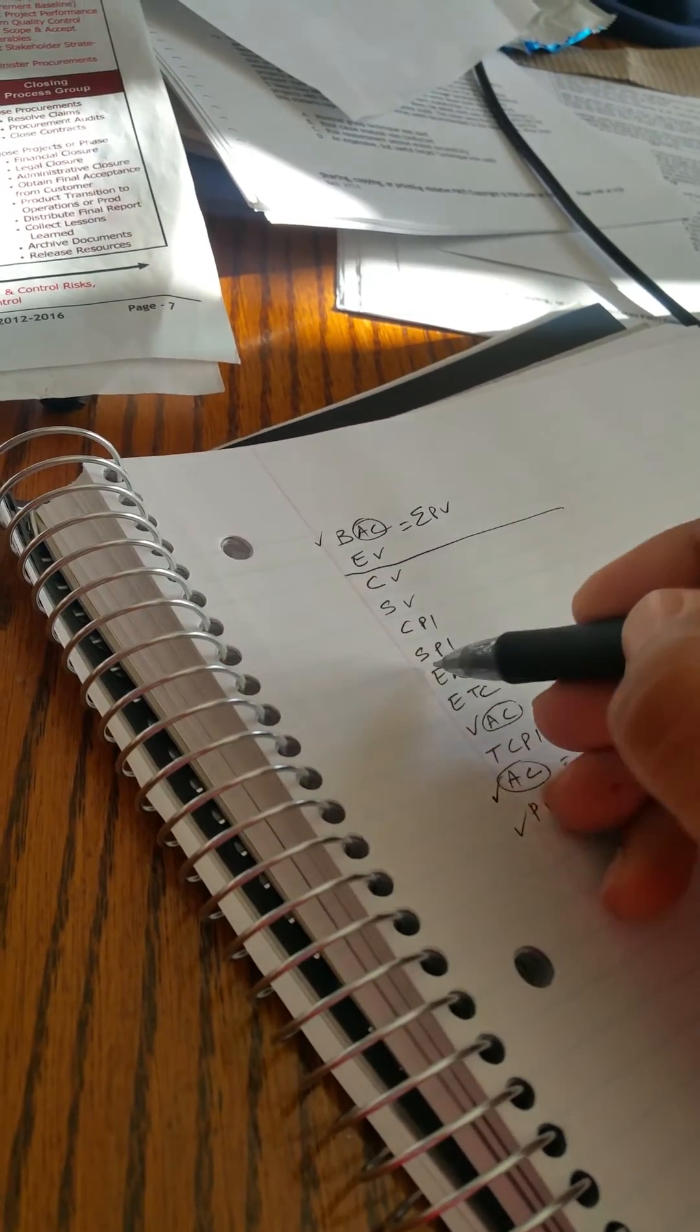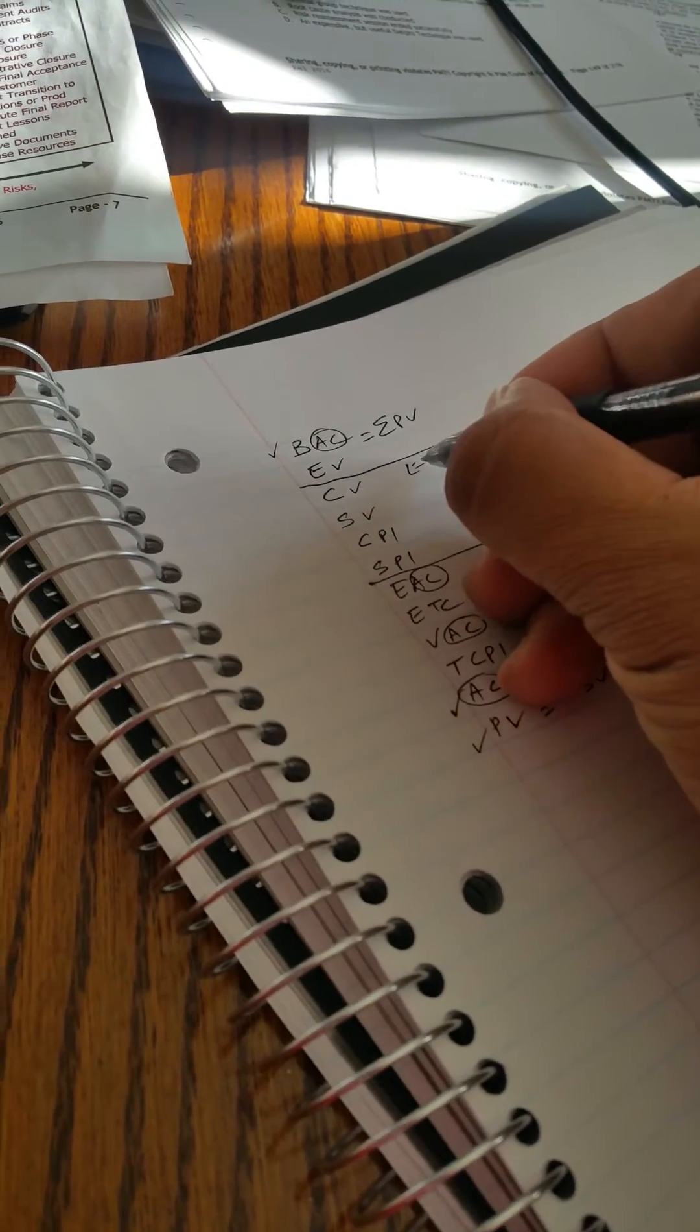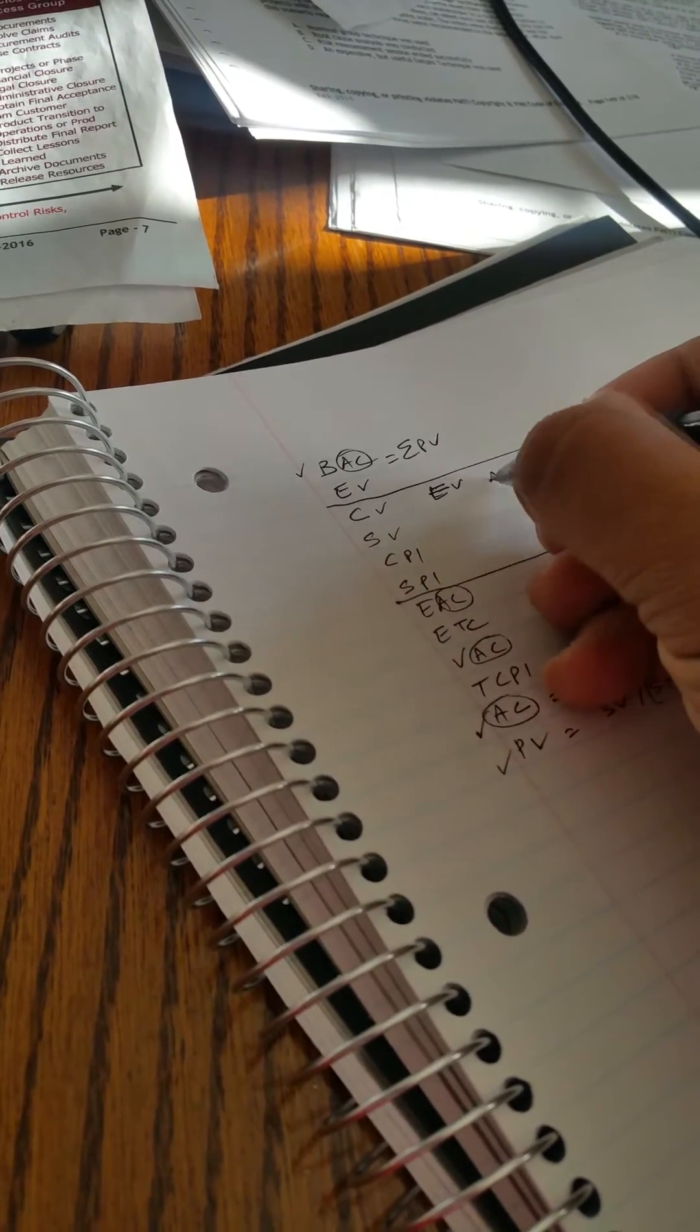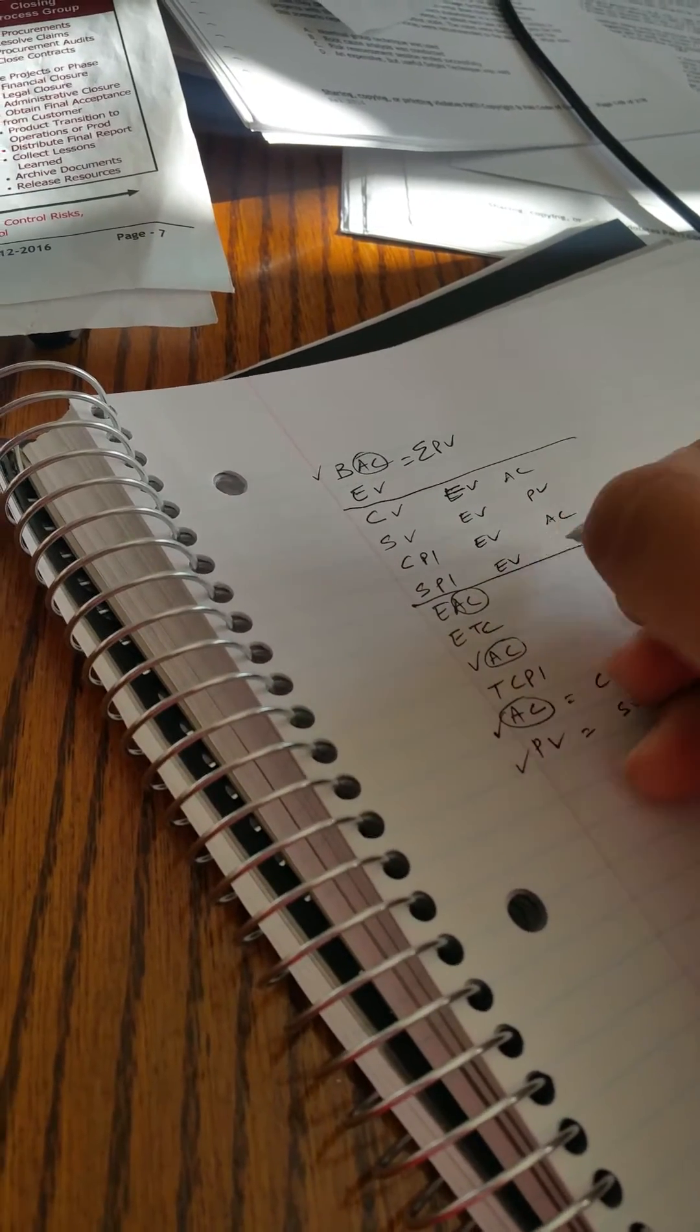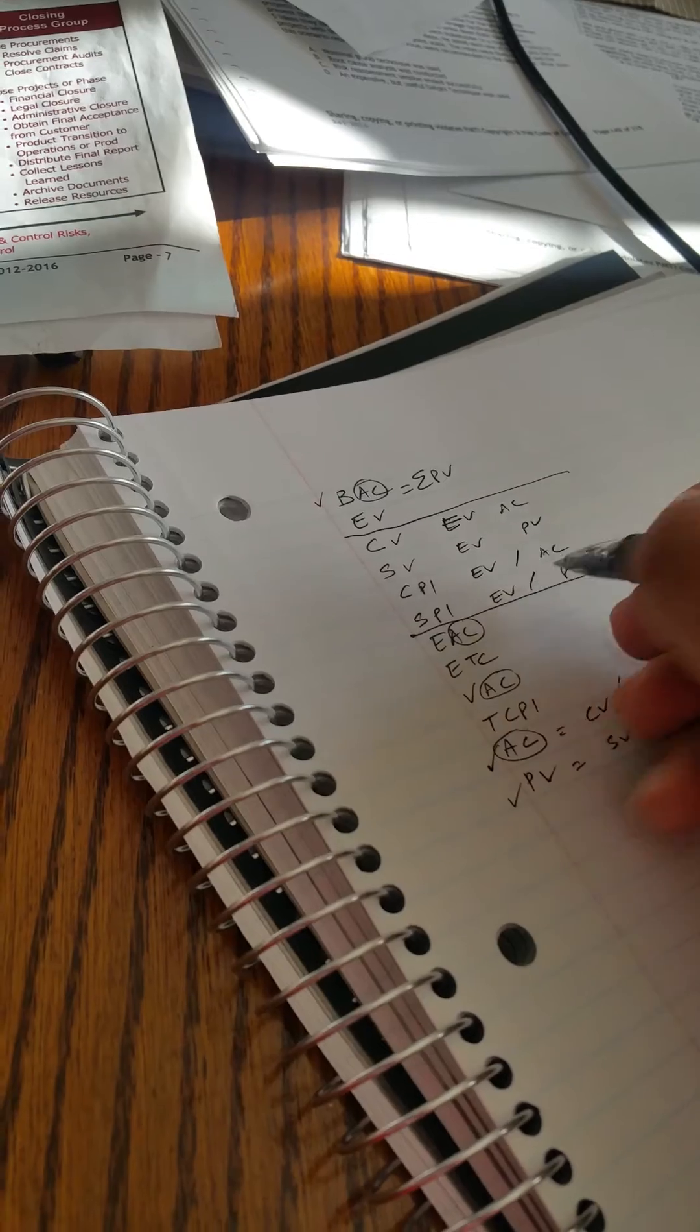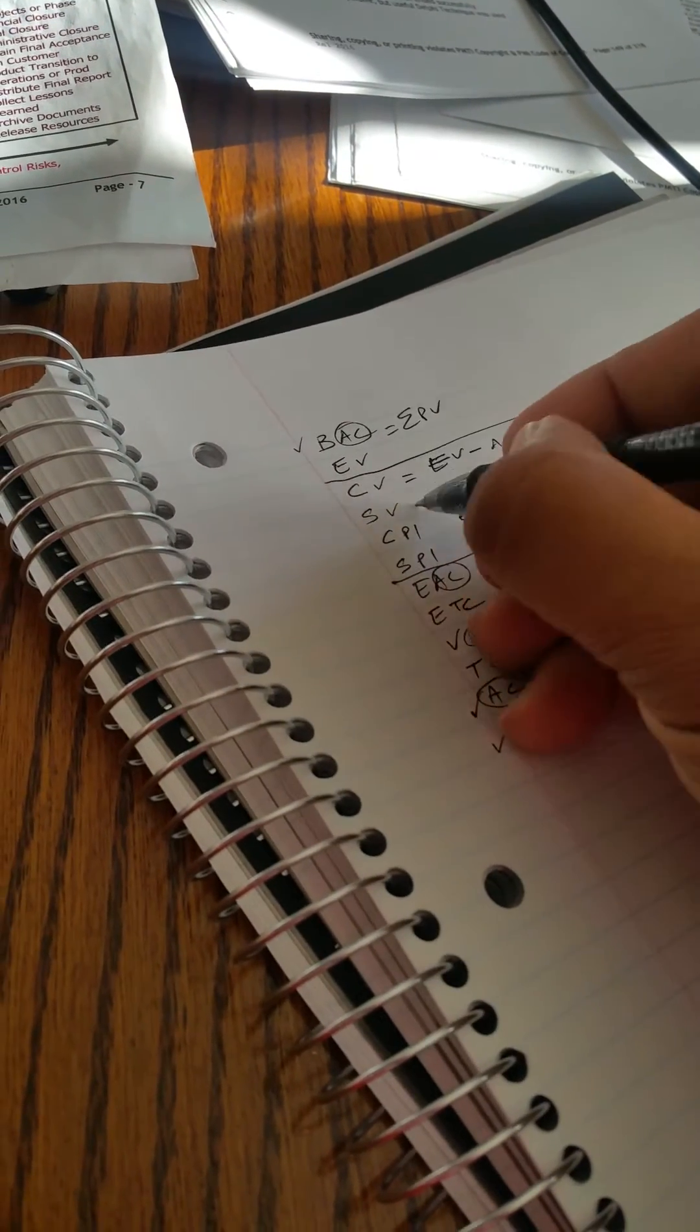So these four equations, one way to learn is what I did was I did EVAC and EVPV, EVAC and EVPV. The last two are the division signs, the first two subtractions, and now we're done with these four equations.